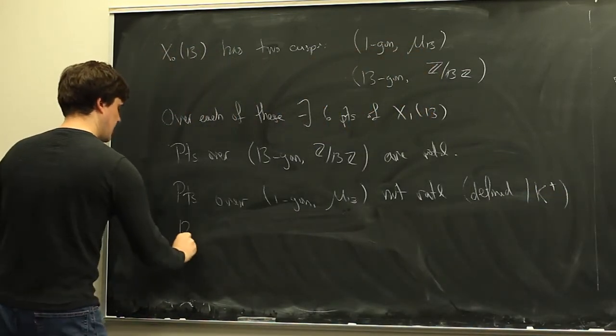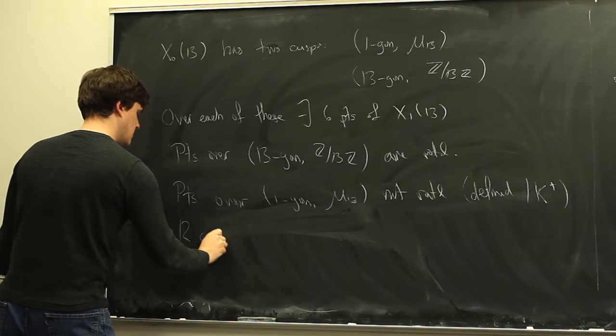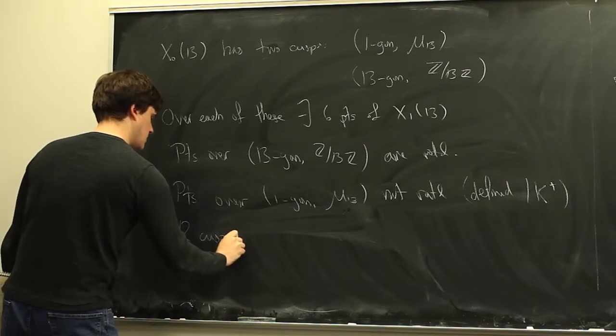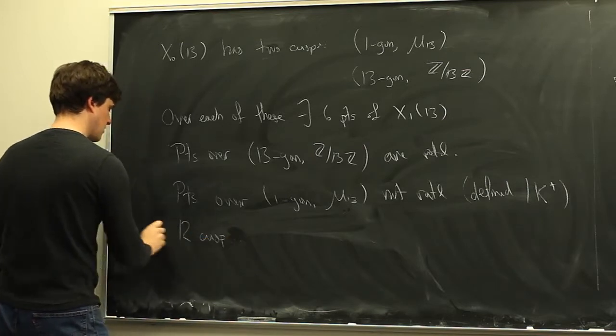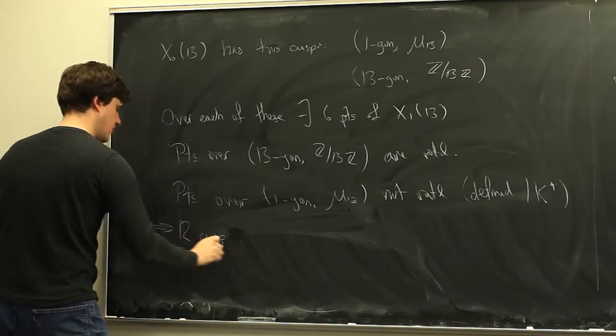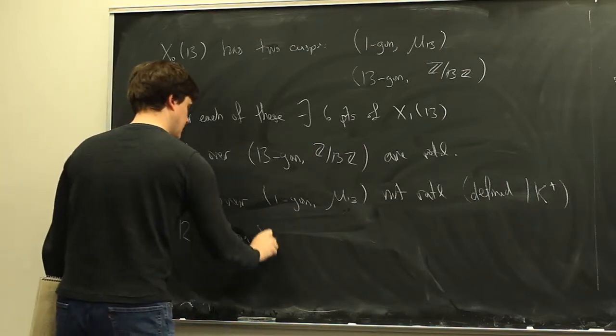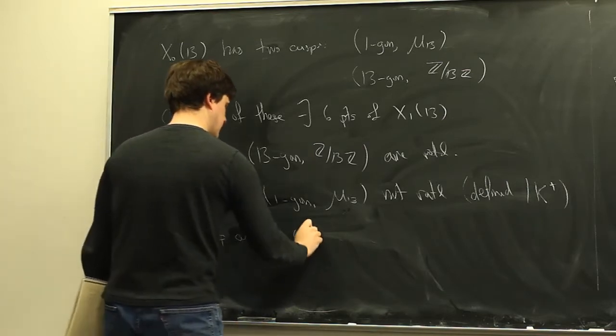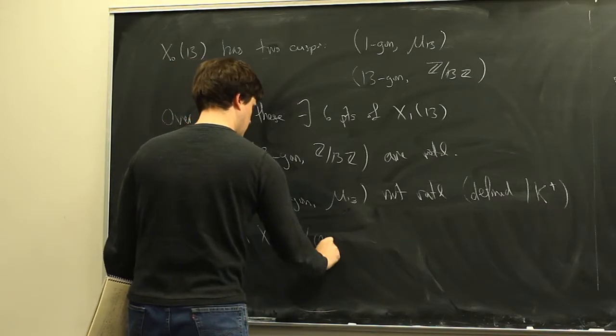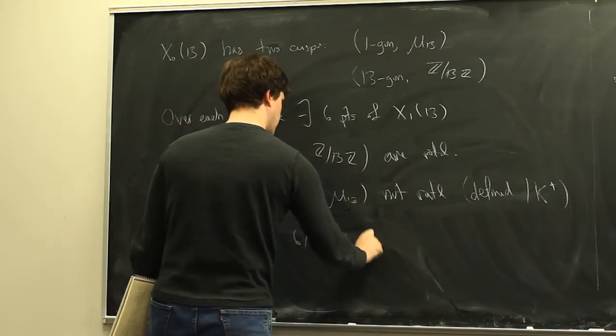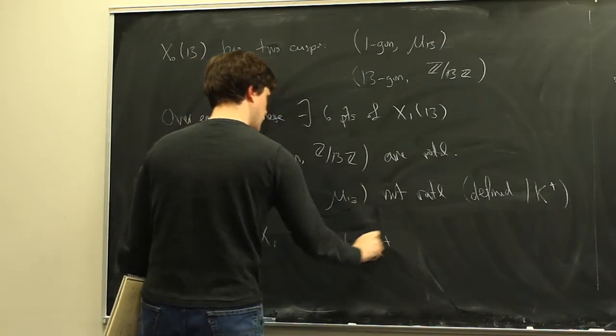So there are 12 cusps on X: six rational over Q, and six over the bigger field K⁺.